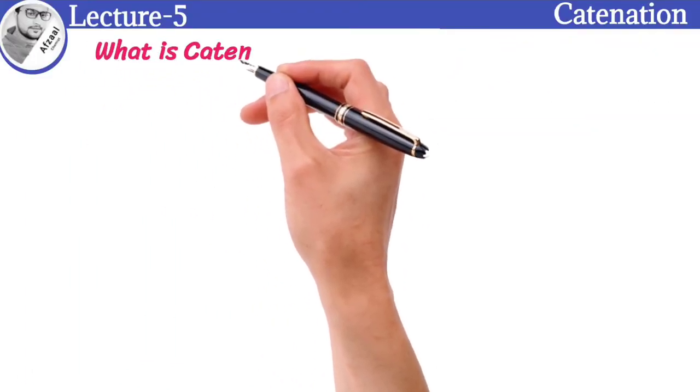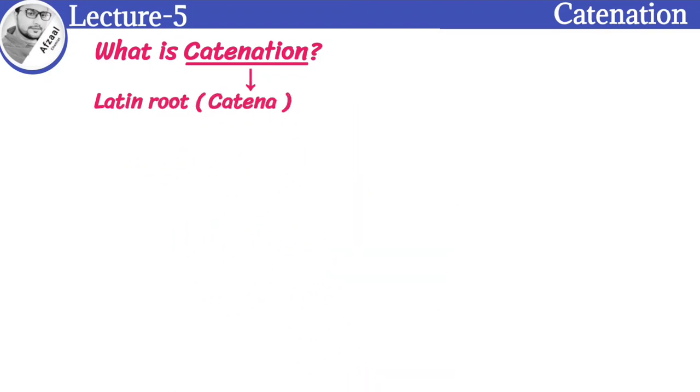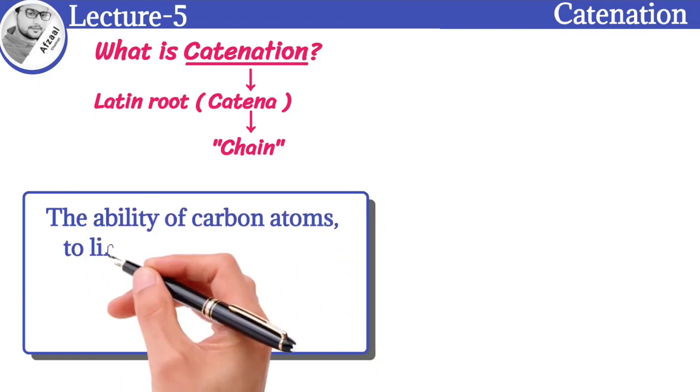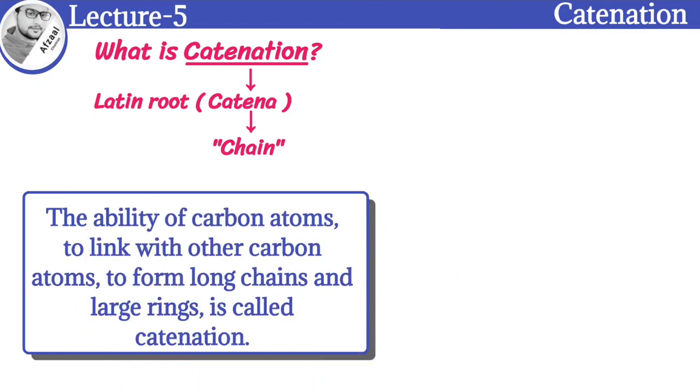Now, let me explain what is catenation. The word catenation reflects the Latin root catena, that means chain. The ability of carbon atoms to link with other carbon atoms to form long chains and large rings is called catenation.